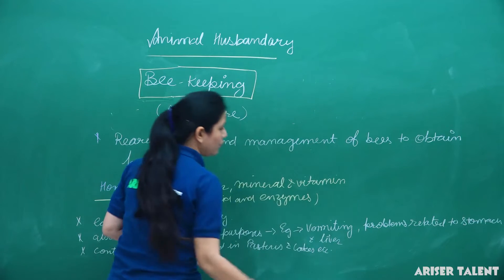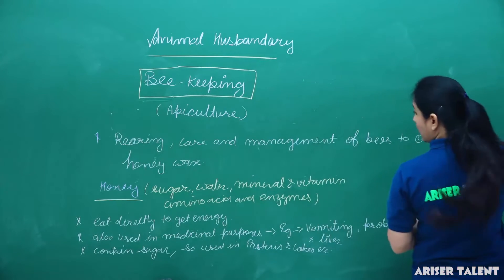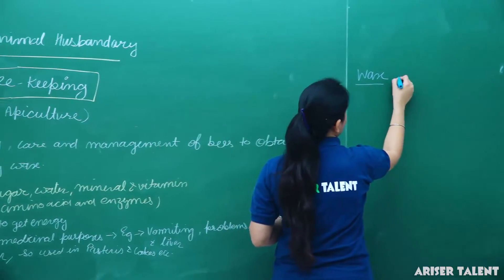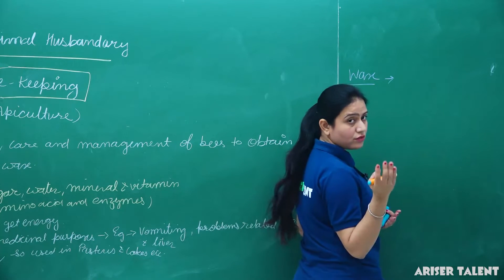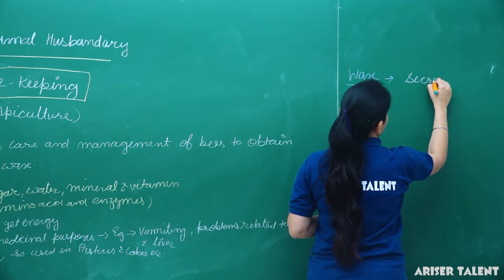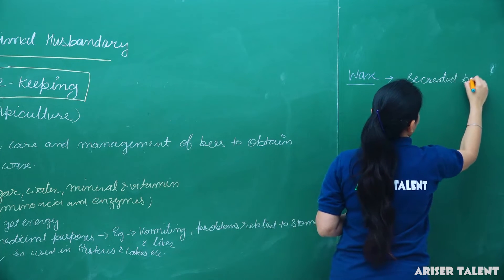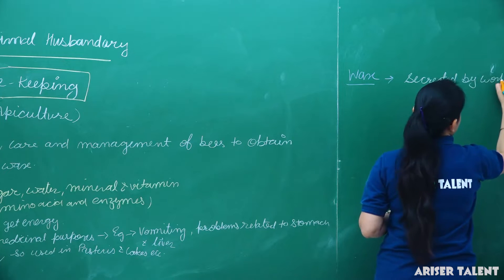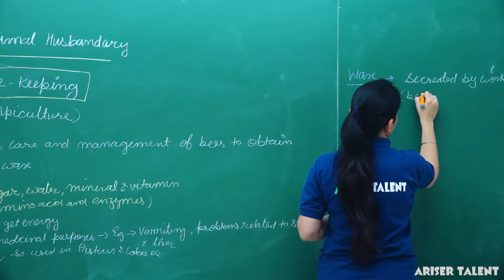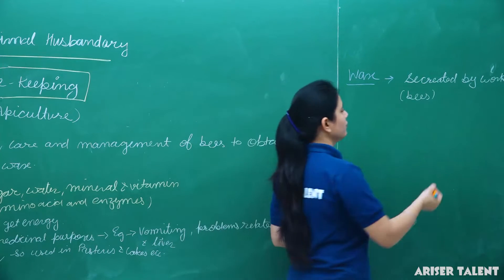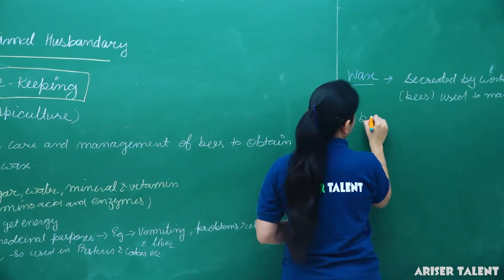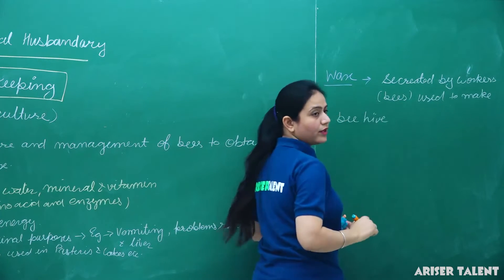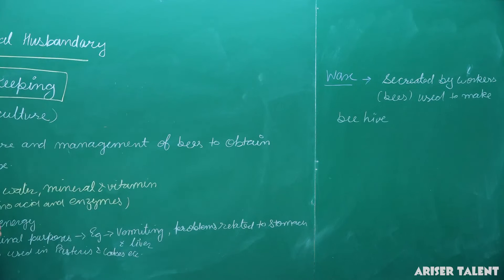Another product is wax. Wax is secreted by worker bees. Workers are a caste of bee, and wax is used to make the beehive.